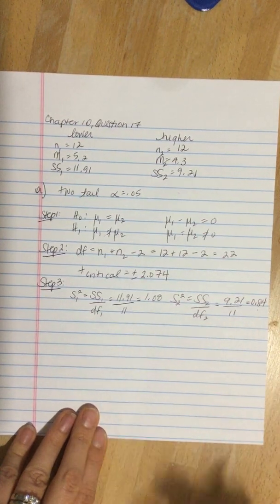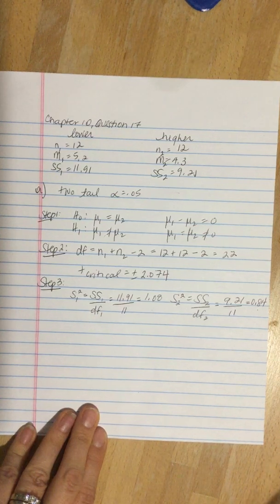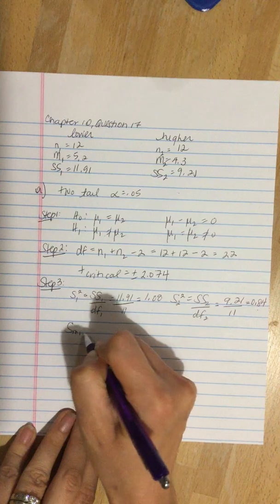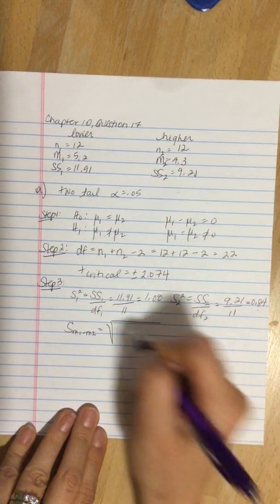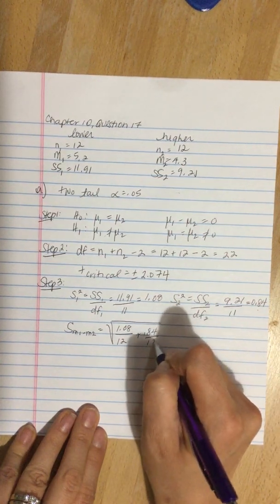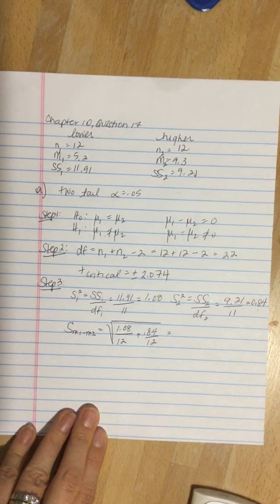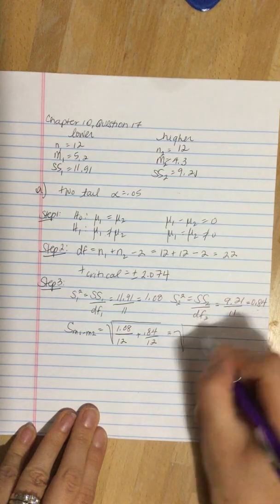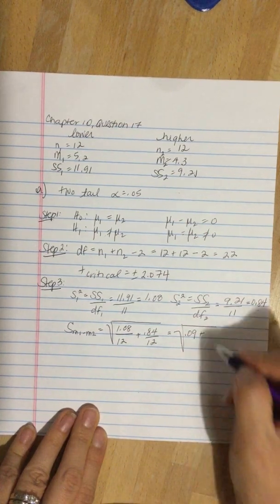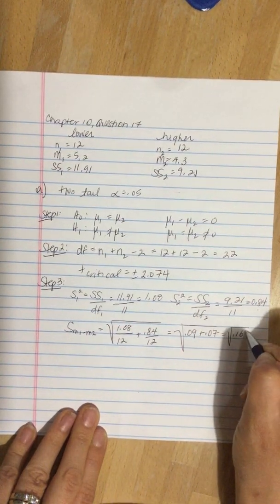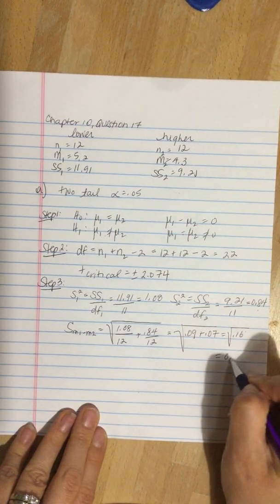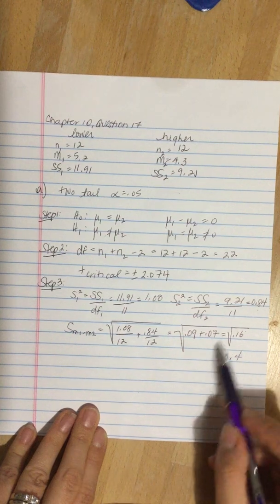And then we're going to take these two values and plug them into our formula for the estimated standard error. So, take 1.08 divided by 12 plus 0.84 divided by 12: 0.09 plus 0.07, square root of 0.16, which is 0.4. And now we can plug this value into our t.